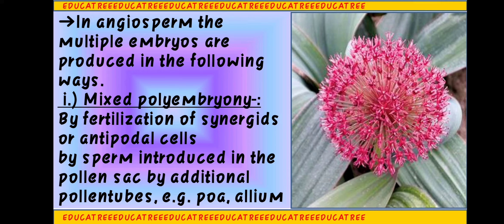In Mixed Polyembryony, what happens is that an additional pollen tube enters the ovule. That pollen tube shows fertilization with the synergid cells or the antipodal cells. The embryo that forms from this fertilization — this type of Polyembryony, where an additional pollen tube acts, is called Mixed Polyembryony. Mixed Polyembryony can be studied in the case of Allium, as shown in the figure.